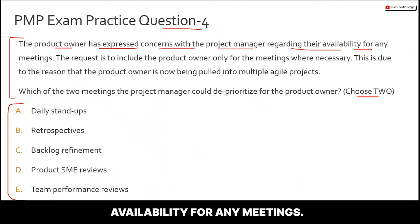It is very important to understand why options B, C, and D were rejected. If you do not understand the intent of a retrospective, who joins a backlog refinement, or what a product SME review involves, you will never answer this question correctly. Please go back and study these agile terms from YouTube videos or your textbooks. The product owner's attendance is optional only for daily stand-ups and team performance reviews.